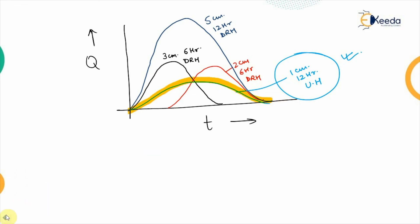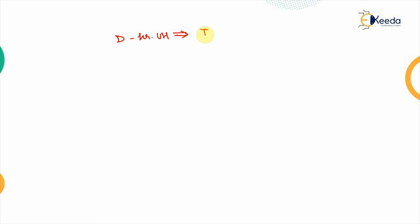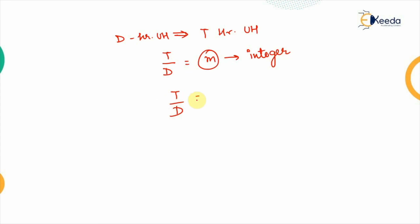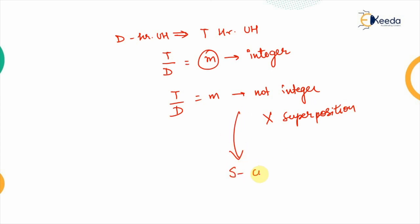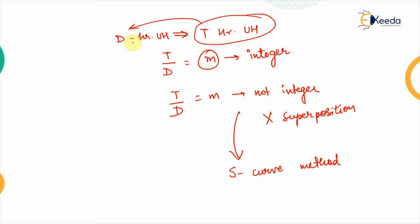This superposition method works when converting a d-hour unit hydrograph to a T-hour unit hydrograph where T/d = m is an integer. If m is not an integer, we cannot use superposition. In that case we use the S-curve method, which will be covered in the next video to derive a T-hour unit hydrograph from a d-hour one.